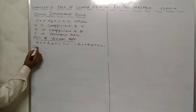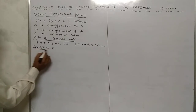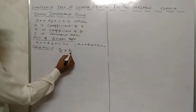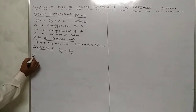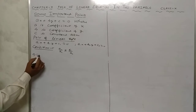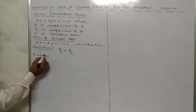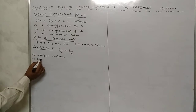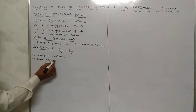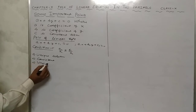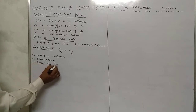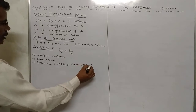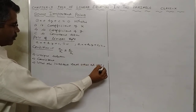Condition one: when a1 upon a2 is not equal to b1 upon b2, the lines intersect each other at exactly one point.